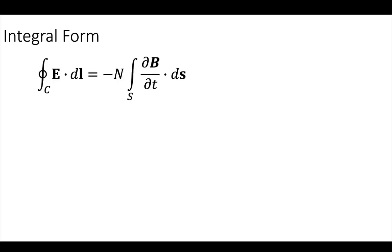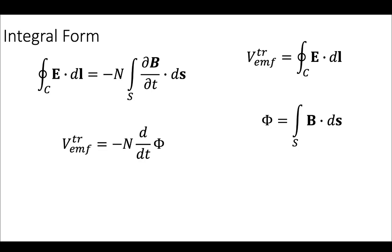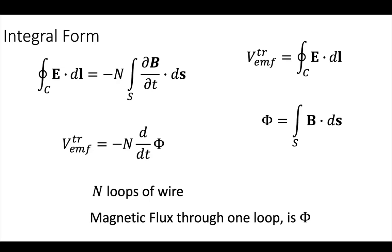So coming to the end, we have the integral form of Faraday's law that we started with for N different loops, N different surfaces. We define the transformer voltage as being that integral on the right, the closed loop integral. And then we have a flux that we defined as well. So consolidating this, we'll see this equation that appears throughout the book that describes the transformer voltage for N number of loops of wire being the time derivative of the magnetic flux. So we have N loops of wire and the magnetic flux through one loop is phi.